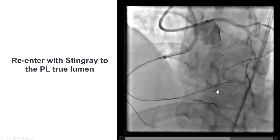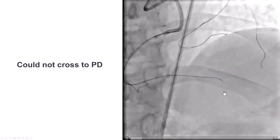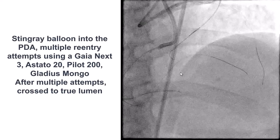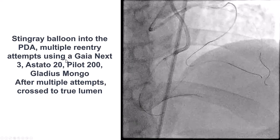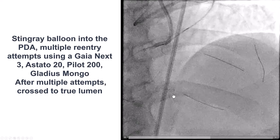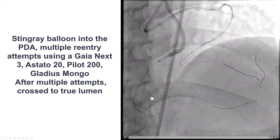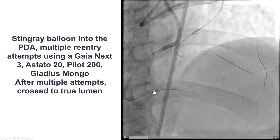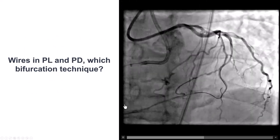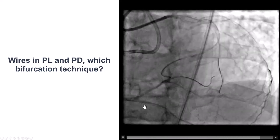We deployed the Stingray again, and this time were able to re-enter into the distal true lumen into the posterolateral. We then tried to re-enter into the PDA — that was not easy — but eventually, through bobsledding and trying different guide wires, we were successful in re-entering into the distal true lumen. So we had failed to re-enter proximal to the bifurcation, achieving instead separate re-entry into the posterolateral and the PDA. The challenge now was that we had a lot of dissection along the bifurcation.